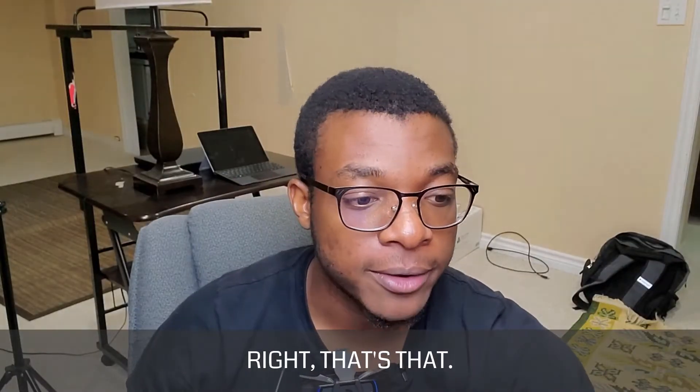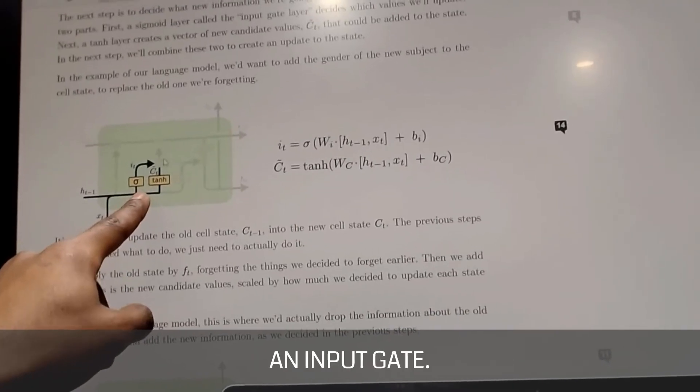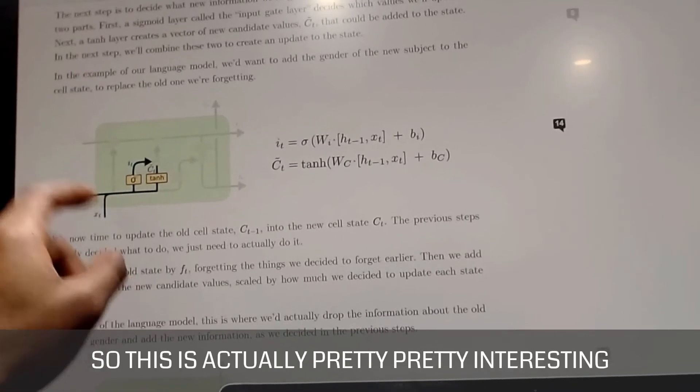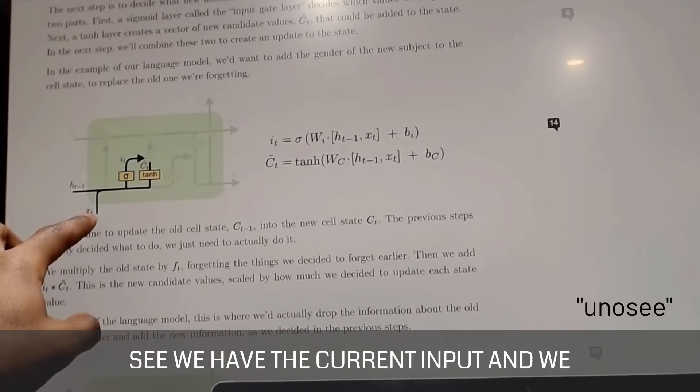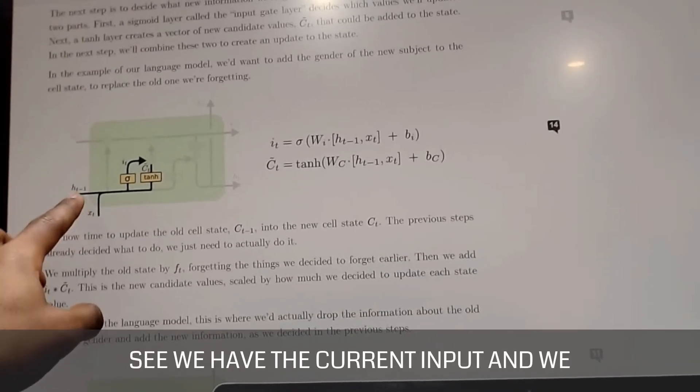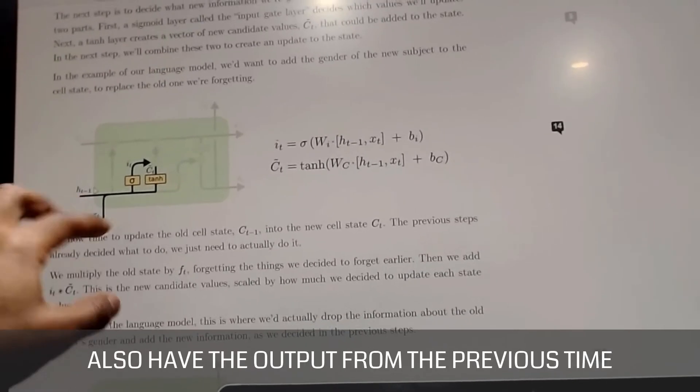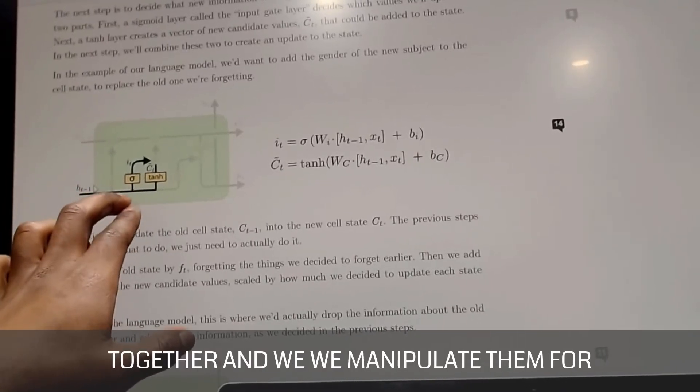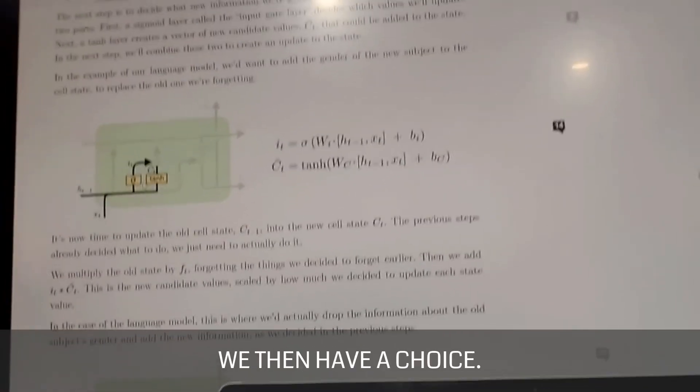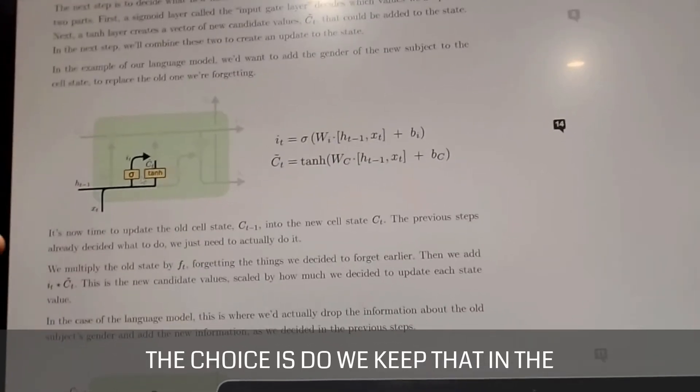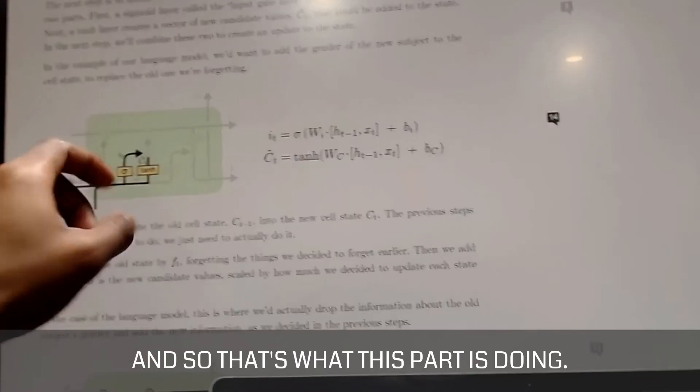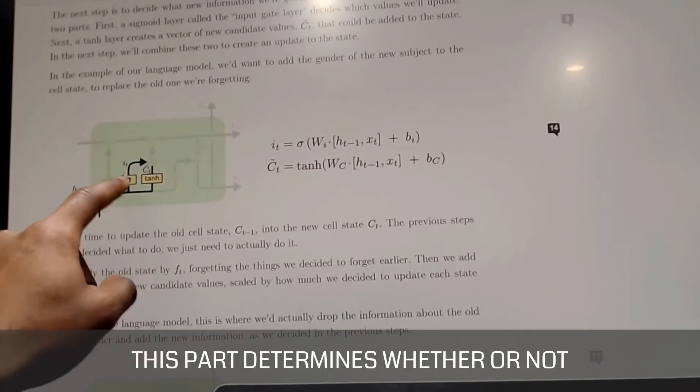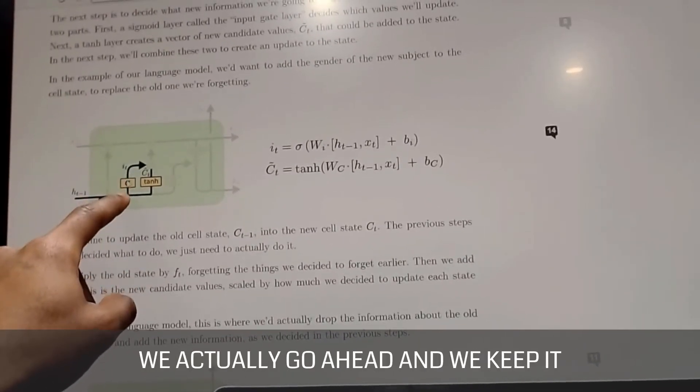The cell state's the memory, right? That's that. And then here what we have is we have an input gate. So an input gate. So this is actually pretty interesting here. So in this current time step, we have the current input and we also have the output from the previous time step. And so once the two of them come together and we manipulate them for the current time step, we then have a choice. The choice is do we keep that in the cell state or not? And so that's what this part is doing.